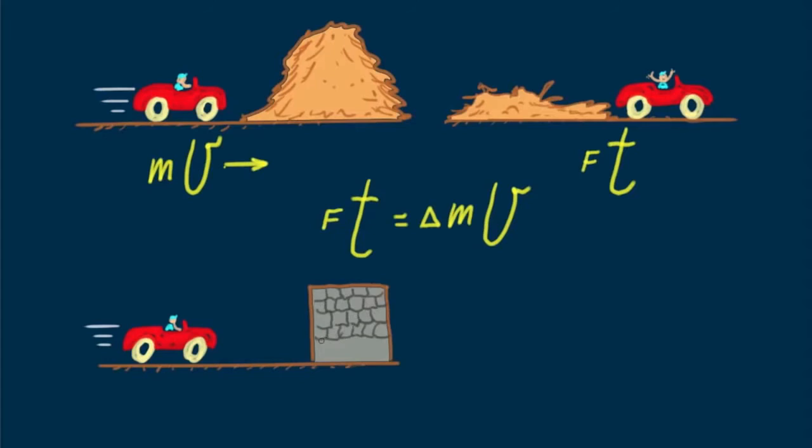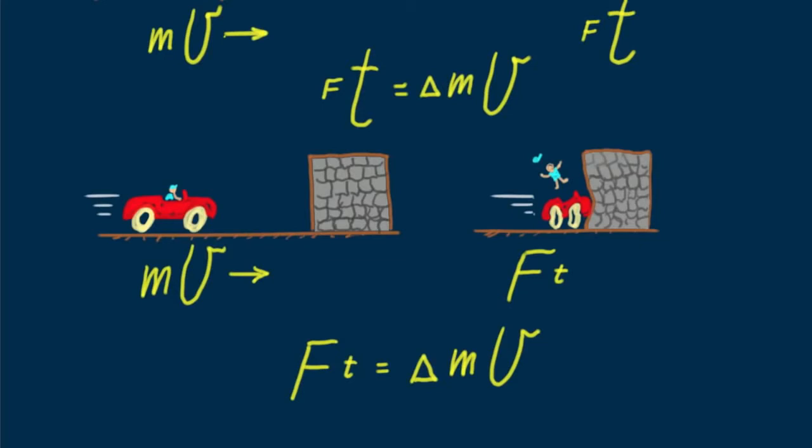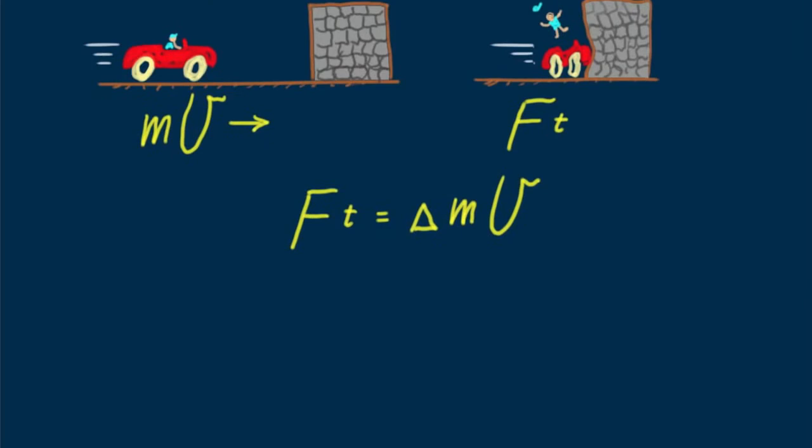But suppose the collision is with a stone wall. Here the impulse is mostly force, because the time during which the impulse occurs is short. Big F times t equals delta mv. So minimum force occurs when the time of contact is long. No matter how the car is stopped, the impulse ft is the same.